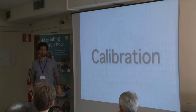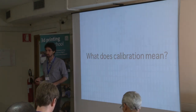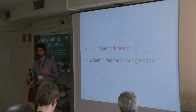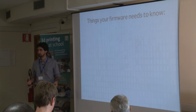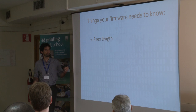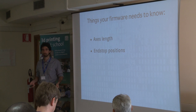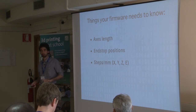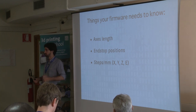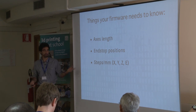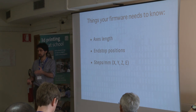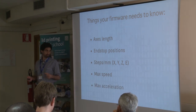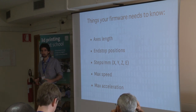When you get your printer working and want to start printing, you need calibration. Calibration means two things: firmware calibration and software calibration on the computer side. Your firmware needs to know the dimensions of the machine - how long are the axes, where are the endstop positions, and what is the conversion factor between motor turns and length of movement on each axis. You also need to tell it maximum speed so the printer doesn't destroy itself, and maximum acceleration because you have masses moving.